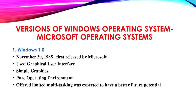Versions of Windows operating system. One: Windows 1.0. Released on 20th November 1985, first released by Microsoft. Used graphical user interface. Simple graphics. Pure operating environment. Offered limited multitasking and was expected to have a better future potential.